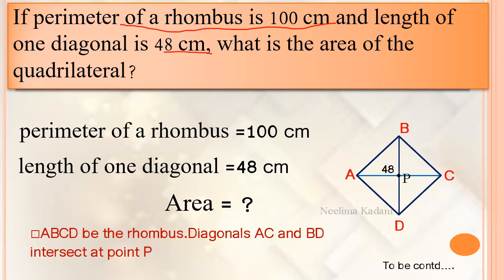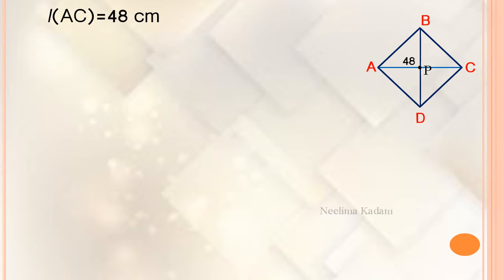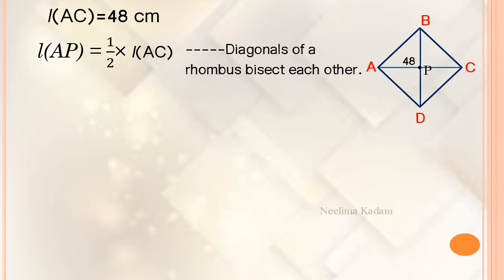Now, length AP equals half of length AC, because diagonals of a rhombus bisect each other. Therefore AP equals half into AC. But AC is given as 48, so AP equals half into 48, which gives length AP equal to 24 centimeters.